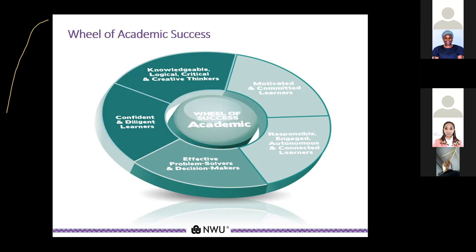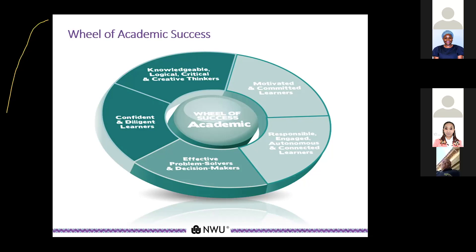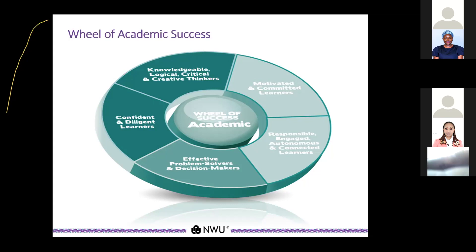Being proactive means taking it upon yourself to be held accountable for your studies, engaging with students, seeking peer helpers, and starting an online study group if needed. Being a confident and diligent learner means supporting quality work — going through your work, checking for spelling errors, and performing more academically to boost your self-confidence. Being a knowledgeable, logical, critical, and creative thinker means expanding your knowledge, taking advantage of resources such as accessing the online library or downloading articles and books online.